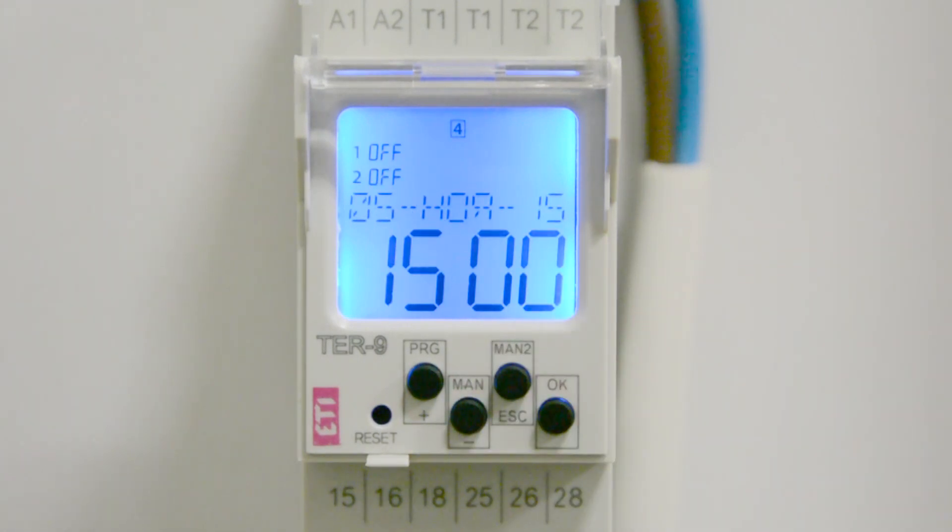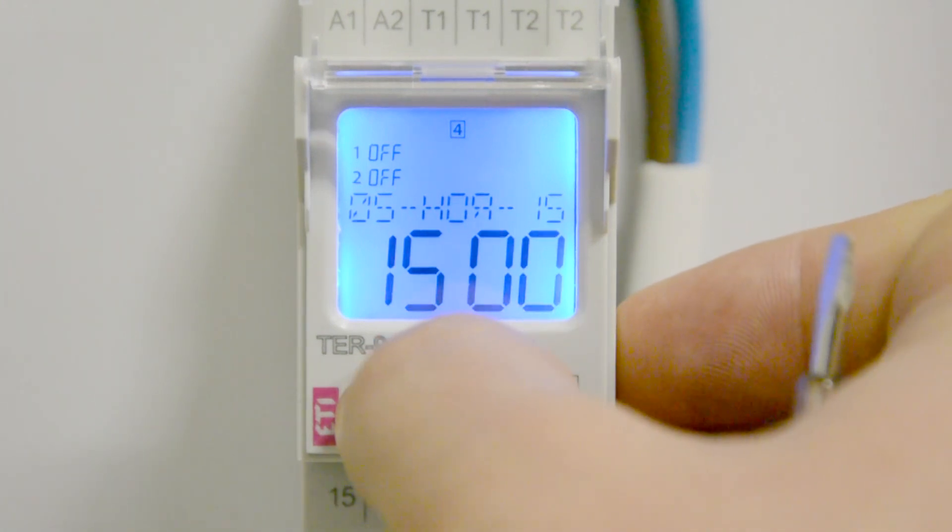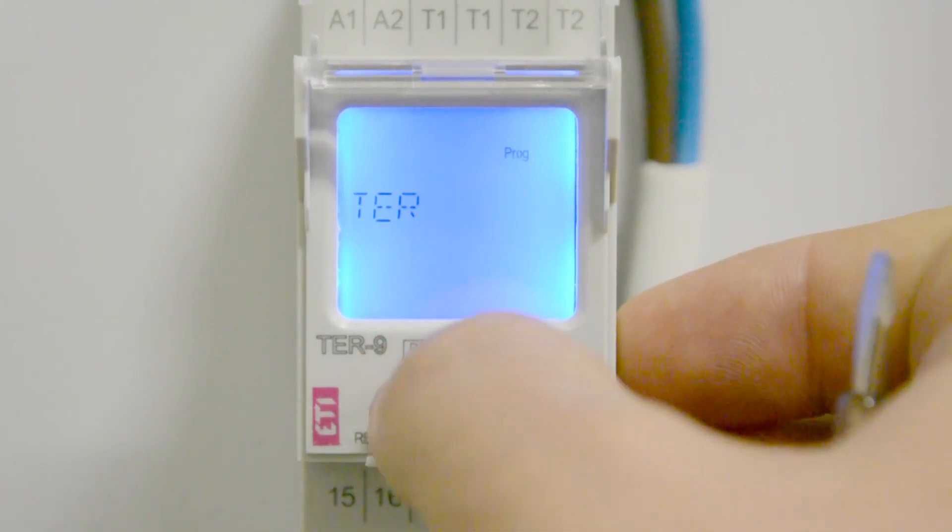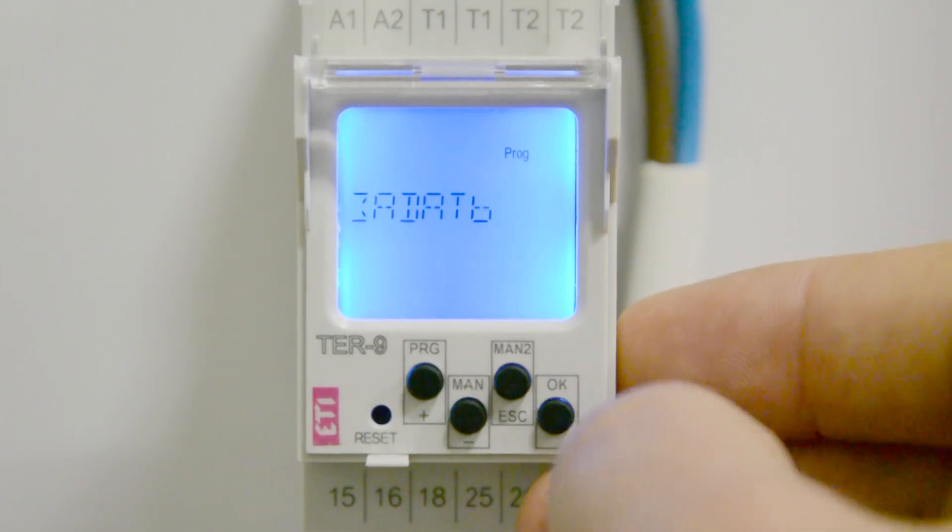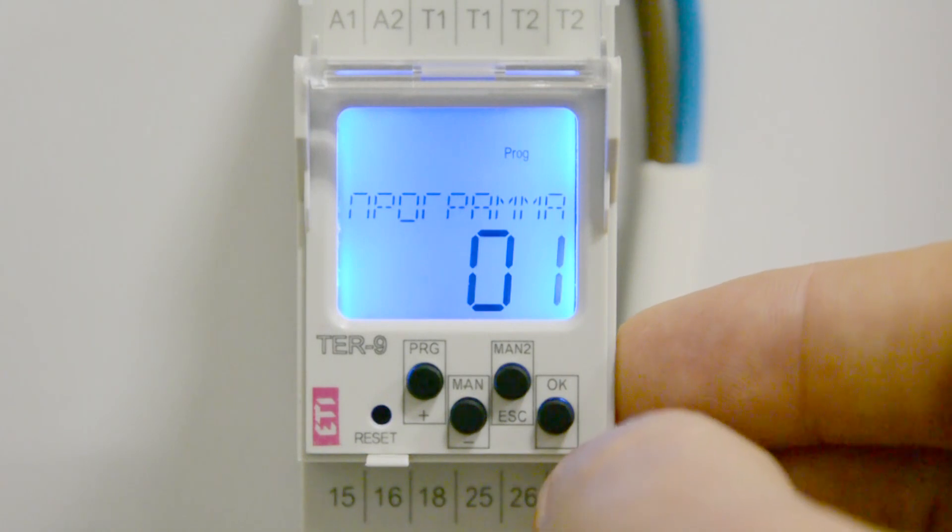To link the relay operation to real-time, go to the time program menu, go to the add submenu, set the program serial number.